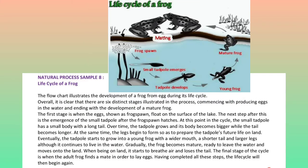The flow chart illustrates the development of a frog from egg during its life cycle. Overall, it is clear that there are six distinct stages illustrated in the process, commencing with producing eggs in the water and ending with the development of a mature frog. The first stage is when the eggs, shown as frog spawn, float on the surface of the lake. The next step is the emergence of the small tadpole after the frog spawn hatches.